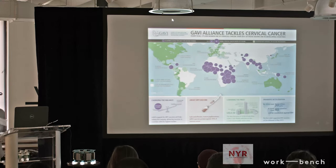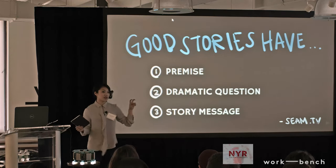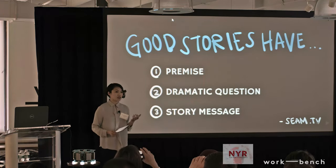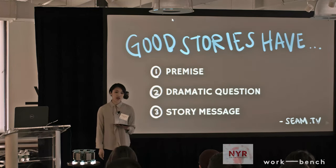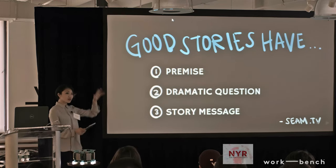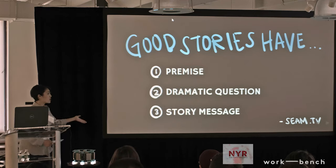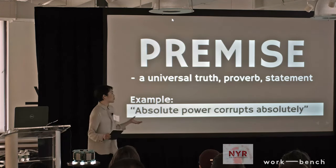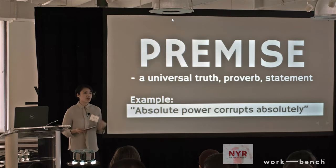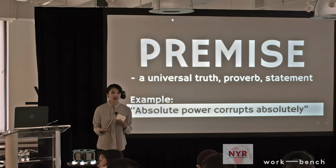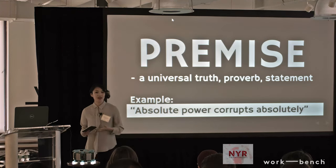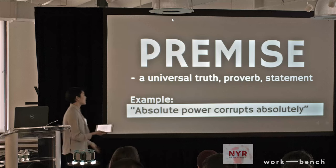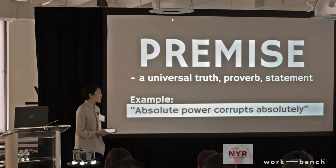So what goes into a good story? These are the big threes. This is a framework presented by SIEM — the Shared Experience Art Machine — an online community of writers and artists founded by the producer of the 007 films and the James Bond games. All good stories have a premise, a dramatic question, and a story message. Your premise is a universal truth — a proverb, a statement that people generally agree with. An example that everyone knows is 'you can't teach an old dog new tricks.' The example we're going to work with is 'absolute power corrupts absolutely.'